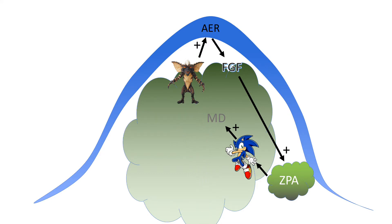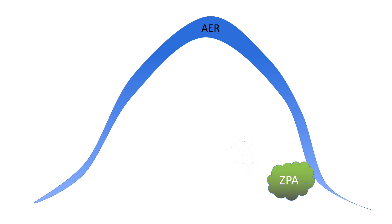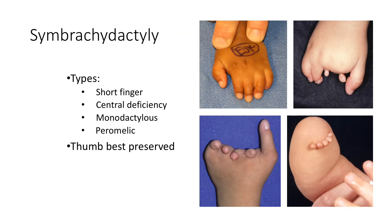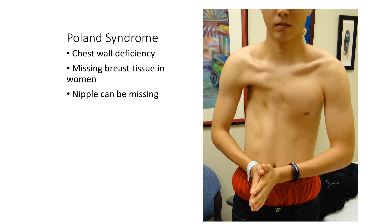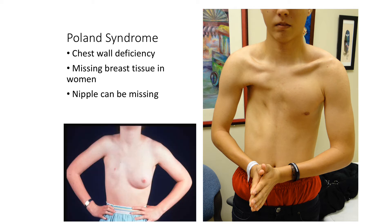What else can happen? If you lose the blood vessel supplying the mesoderm, the mesoderm cannot grow, cannot make gremlin, and the whole cascade falls apart. But you still have an AER, so you can still make fingertips. Wherever the limb stopped, that's where you get your fingertips. You can have short finger, central deficiency, monodactylous, or peramelic, with the thumb being best preserved. If you see preservation of only one digit and it's a thumb, it's most likely cymbarachidactyly, especially if you see ectodermal elements like fingernails and fingertips. Poland syndrome is associated particularly with the short finger type, where you have chest wall deficiency affecting the sternocostal head of the pectoralis major, with missing breast tissue and nipple in women.